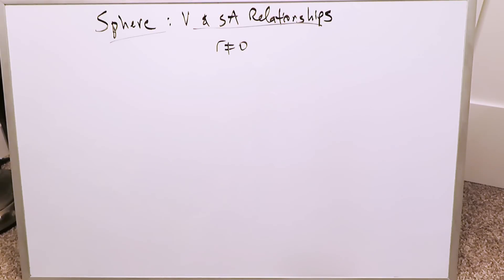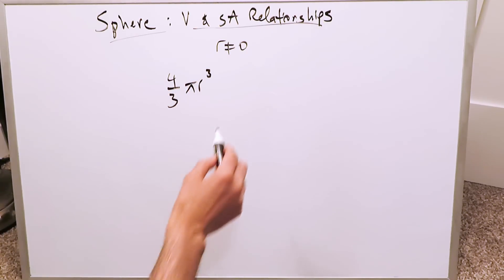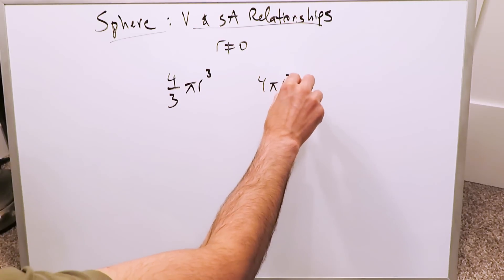In all instances, the radius cannot be equal to zero, otherwise you will have no sphere. If you want to determine the value of radius where the volume and the surface area are equal, think about their equations. Volume is equal to 4/3 π r³. That's the volume. The surface area is equal to 4π r².